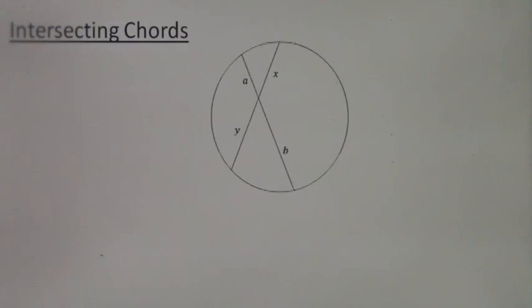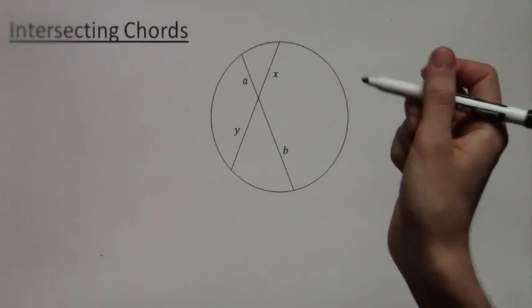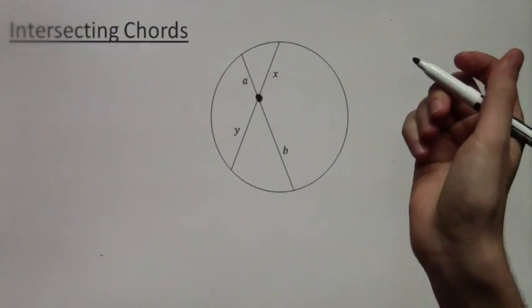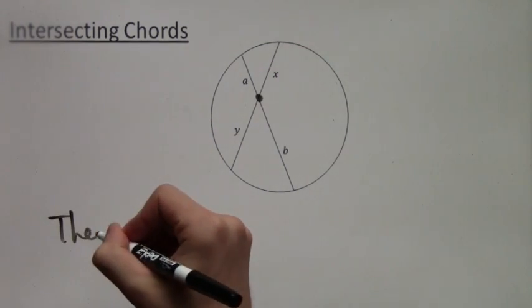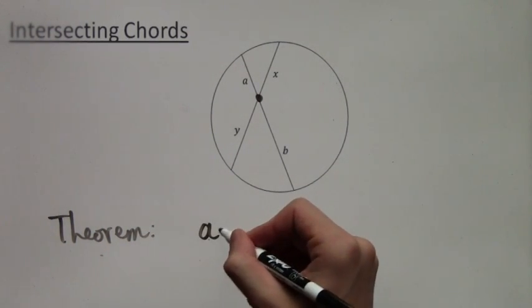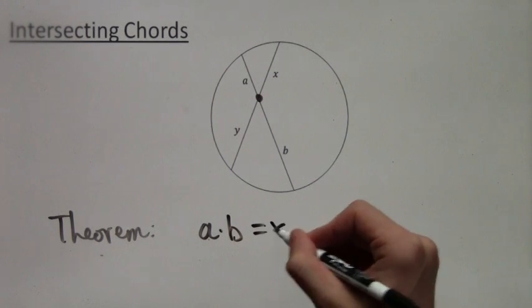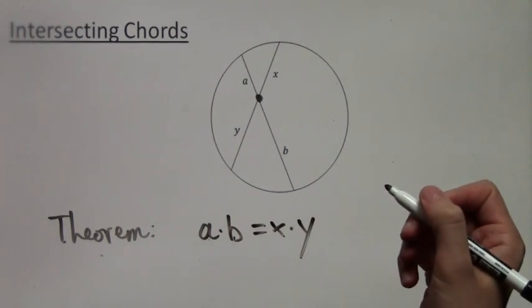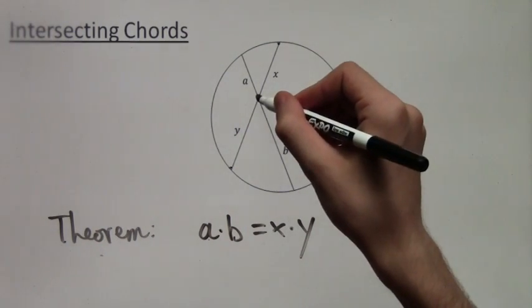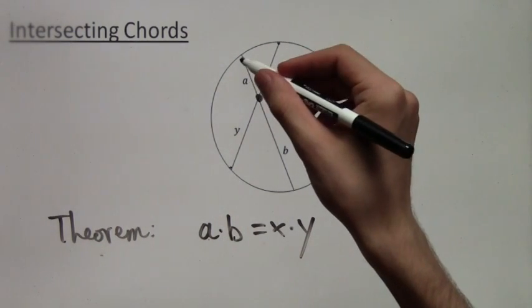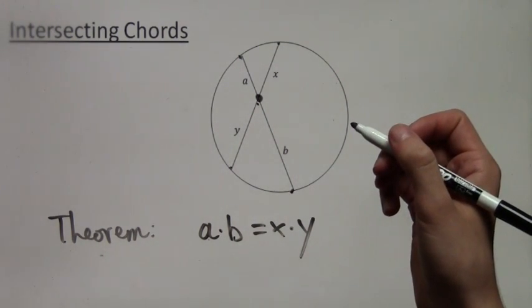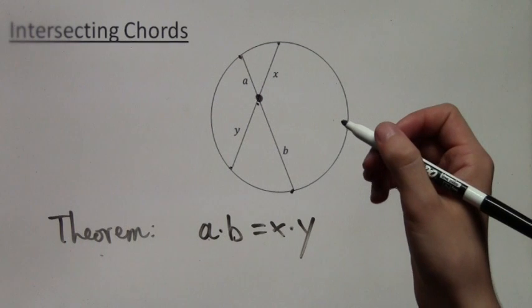What we're going to deal with in this video is a special theorem about intersecting chords. If we have two chords and they intersect, they separate each other into lengths A and B for one chord, and X and Y for the other. Then A times B equals X times Y. The product of the two parts is equal for both chords.